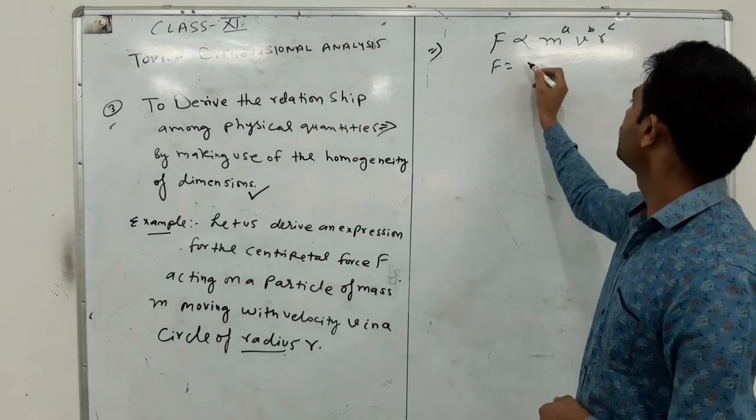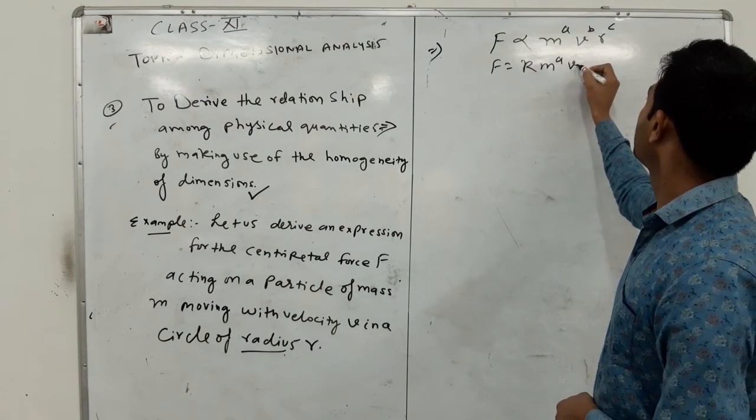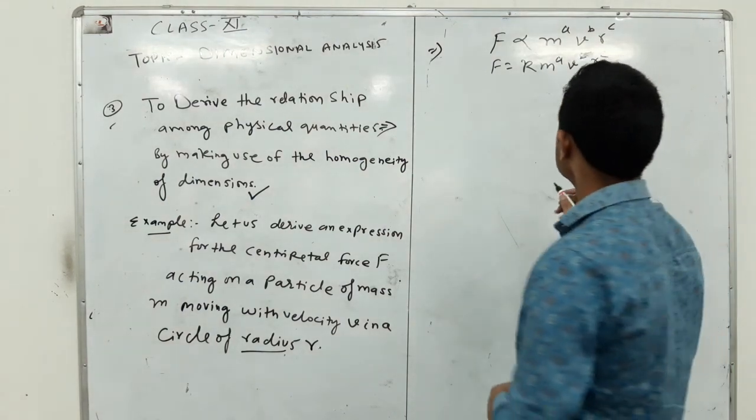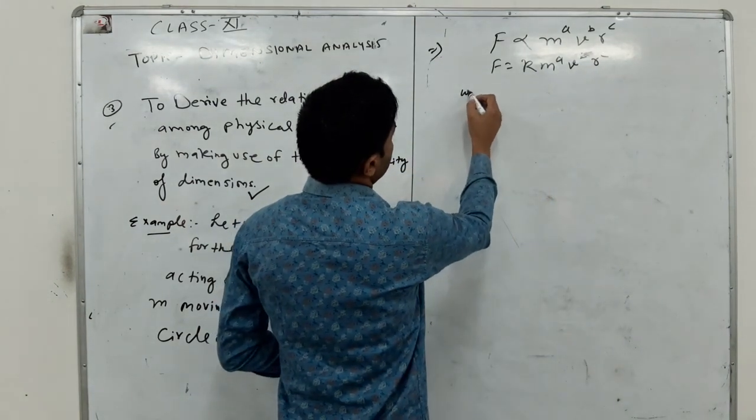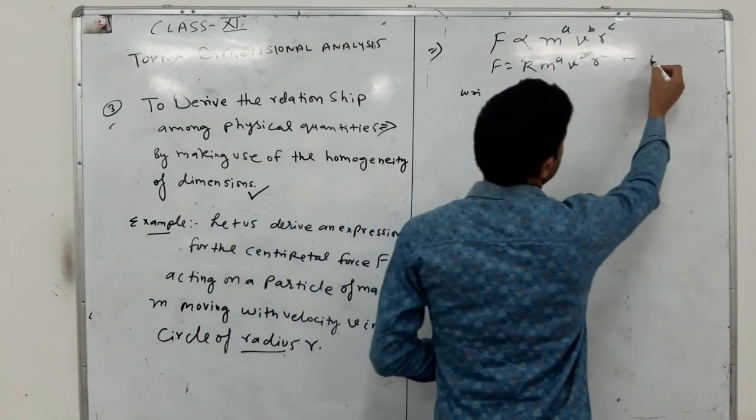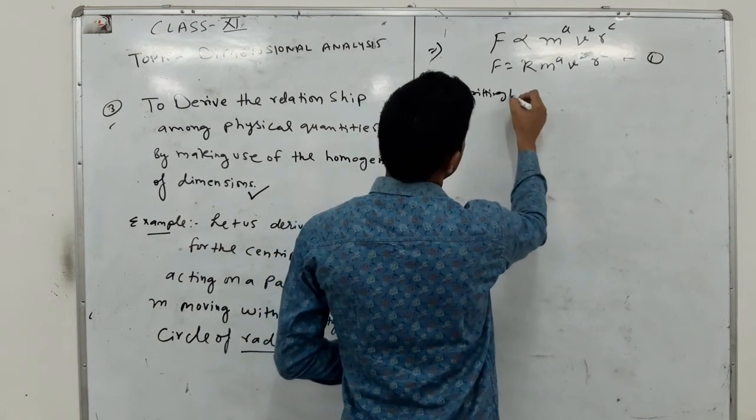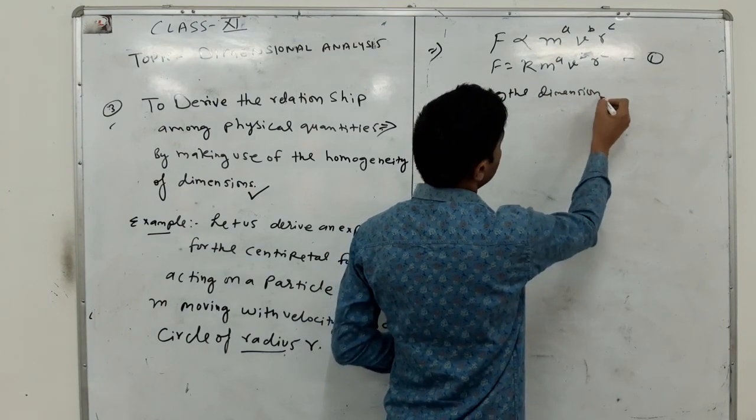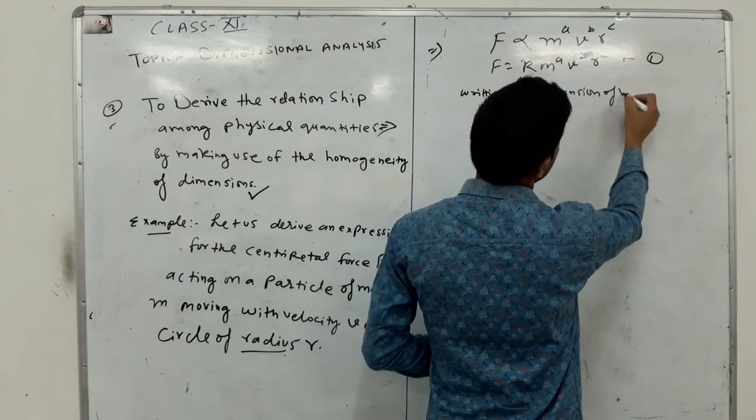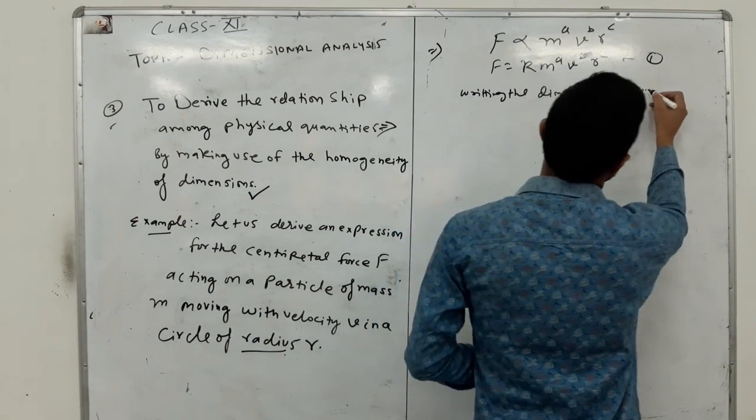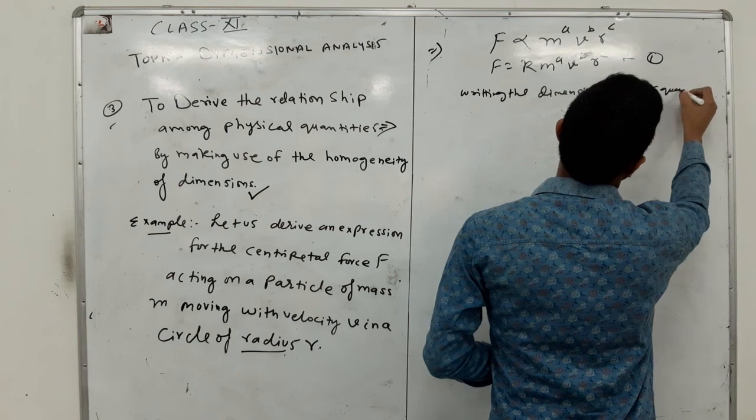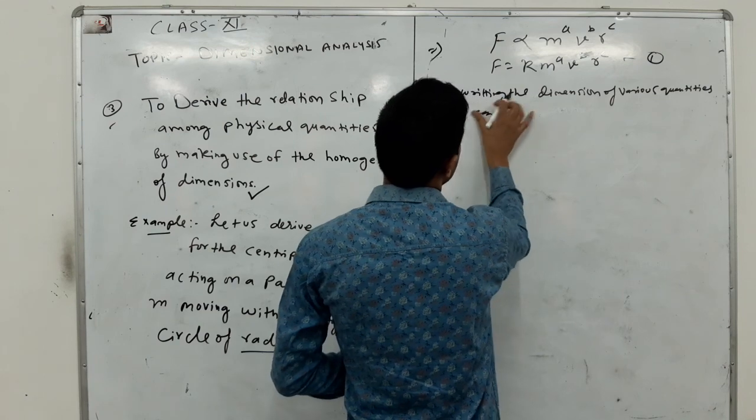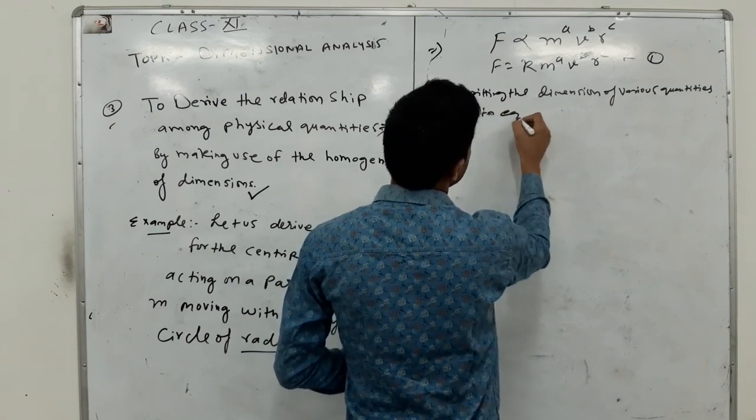Then F equals K times M^A times V^B times R^C. So let this be equation first. Writing the dimension of various quantities in equation first.